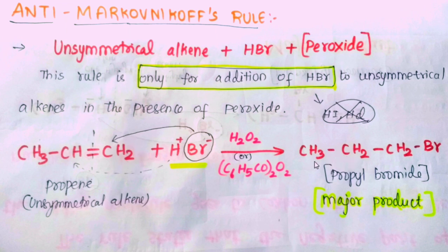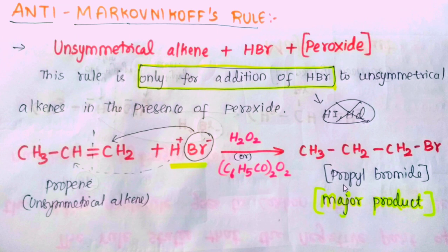So the product: CH₃–CH₂–CH₂Br. The double bond breaks to a single bond. The negative part, the bromide ion, goes to CH₂ (the terminal carbon with more hydrogens), and H⁺ goes to the middle carbon. The product is n-propyl bromide, which is the major product.